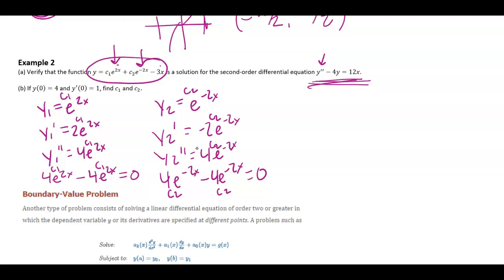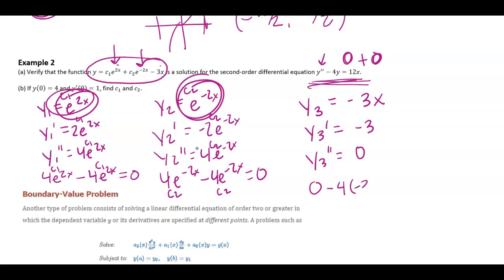All right, well, let's see what's going on, because this, when I plug this in, I get 0. And when I'm plugging this in and taking derivatives, I'm getting 0. So let's see what happens when I plug in. Maybe we call this y3 negative 3x. Okay, well, that would be y3 prime would be negative 3, and y3 double prime would be 0. So 0 minus 4 times negative 3x. Oh, that's where the 12x comes from here.